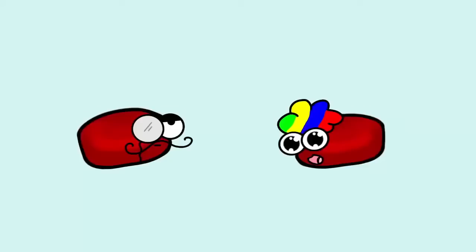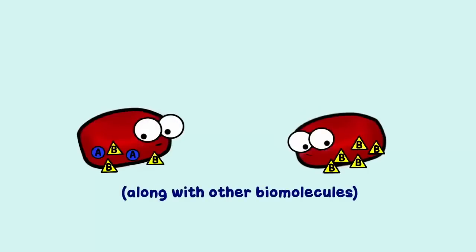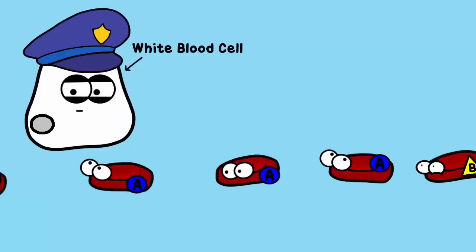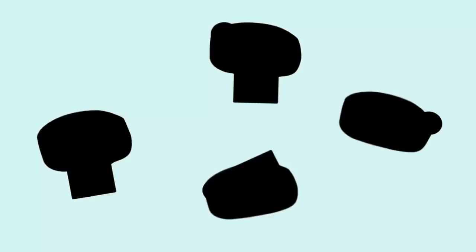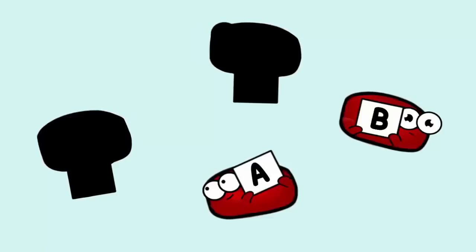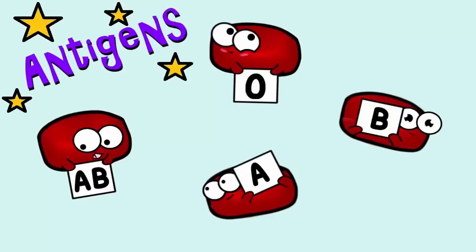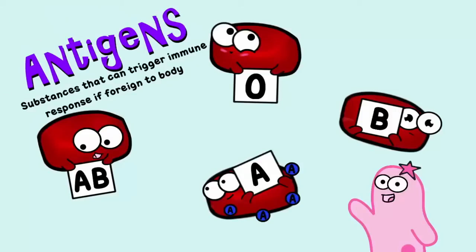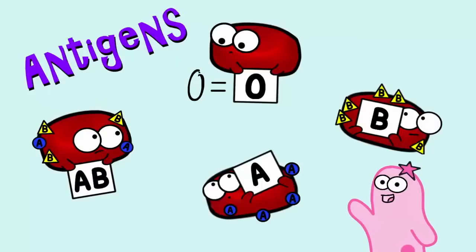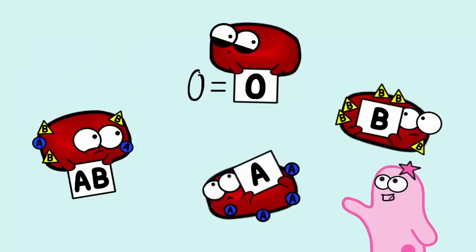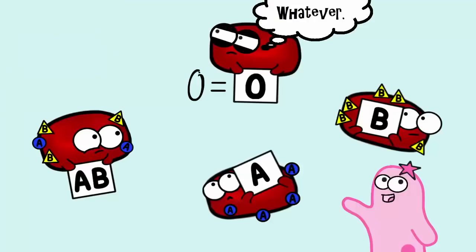It really boils down to the fact that red blood cells are not naked — they have proteins on their surface. And it turns out that your immune system is very protective. If it gets donated blood that has different proteins that it's not used to, it will attack them. With blood type, you can have several different phenotypes: A, B, AB, or O. These letters stand for antigens that are found on the red blood cells. So type A blood has A antigens on the surface of red blood cells. Type B blood has B antigens on the surface. Type AB has both A and B antigens. Type O — I like to think of it looking like a zero — it doesn't have A or B antigens.